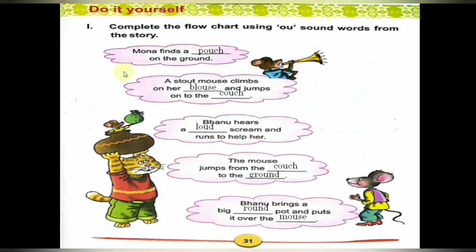Listen children, I will read the sentences once: Mona finds a pouch on the ground. A stout mouse climbs on her blouse and jumps onto the couch. Bano hears a loud scream and runs to help her. The mouse jumps from the couch to the ground. Bano brings a big round pot and puts it over the mouse. These all are OU sound words: pouch, blouse, couch, loud, ground, round, mouse.